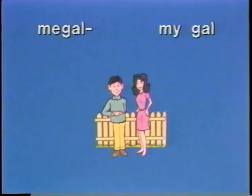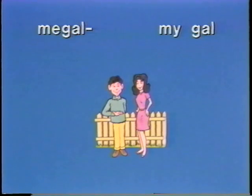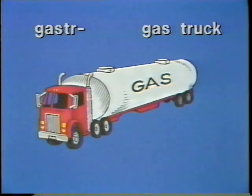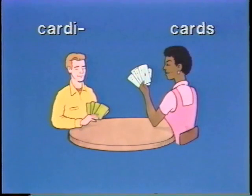Next, the element megal. Megal sounds a little like my gal, and here we see an image of my gal. Megal, my gal. Say it one time: megal, my gal. Again, all of us remember much more of what we see than of what we hear or read. That's why, as the first step in the system, we change the name of the element into an audionym — a sound-alike we can see. Gaster sounds like gas truck; Cardi sounds like cards; and megal sounds like my gal. All of the audionymes in this course have been created for you, carefully selected from the most common words and phrases of the English language.